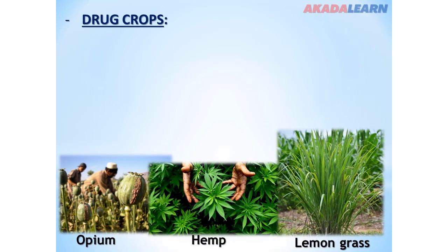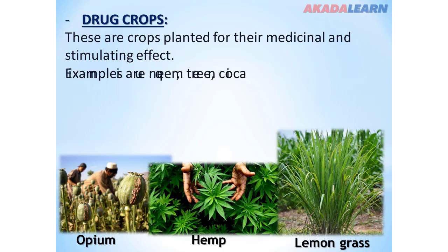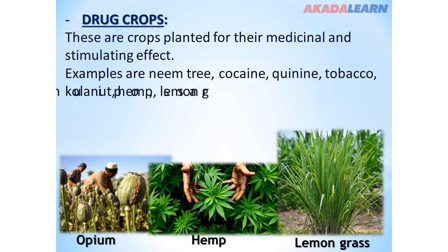Then we have the drug crops. These are crops planted for their medicinal and stimulating effects. Examples include neem tree, tobacco, kola nut, hemp, lemongrass, opium, and many more.